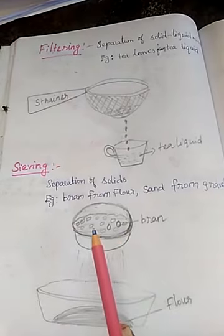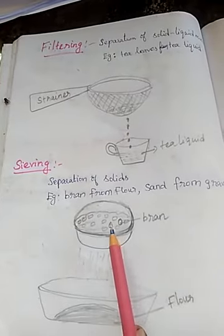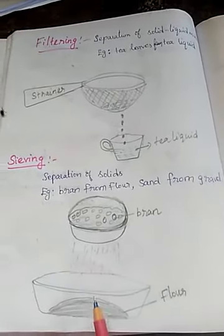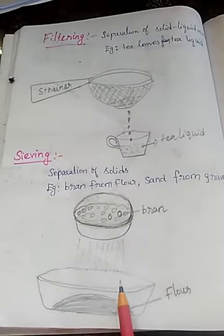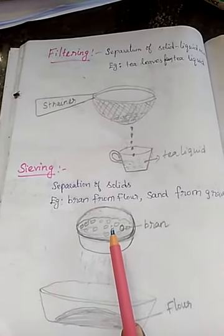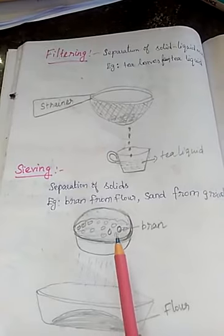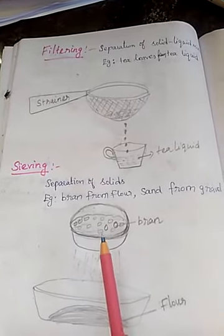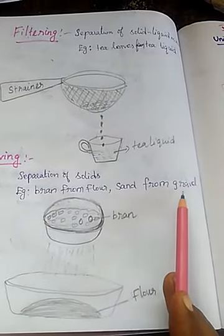Here we see a strainer. Bran and flour are separated, and we get pure flour. A sieve is similar to a strainer, but here we separate solid particles of different sizes. Examples include bran from flour and sand from gravel.